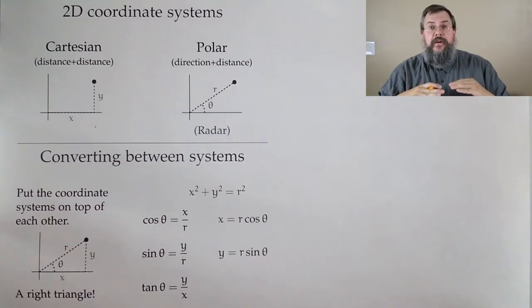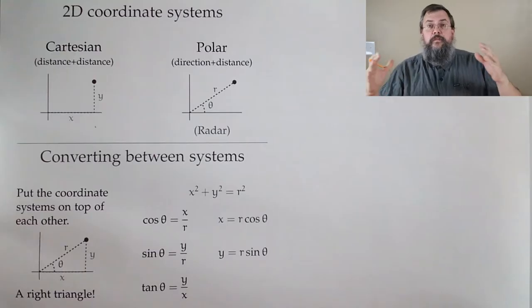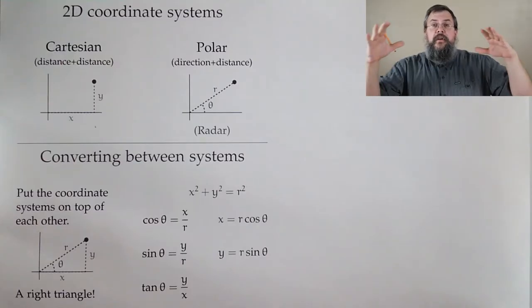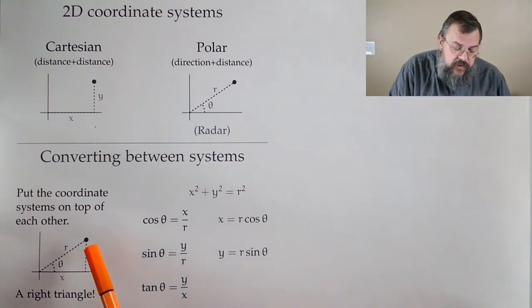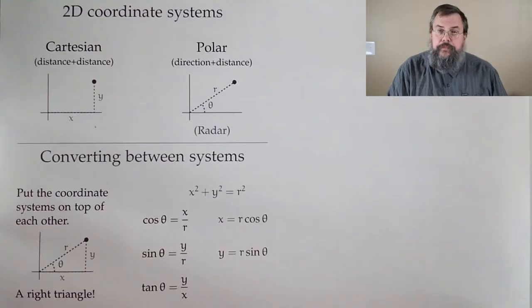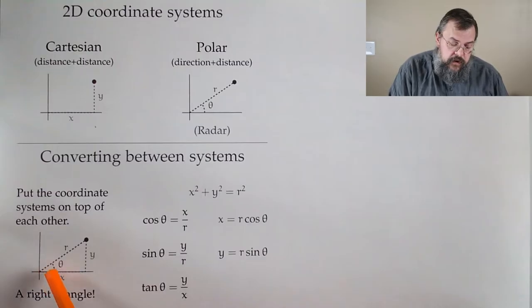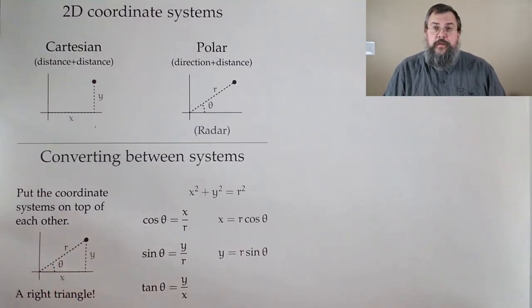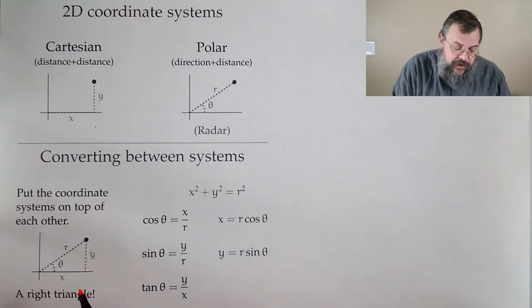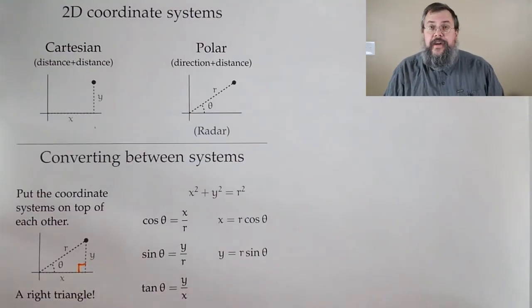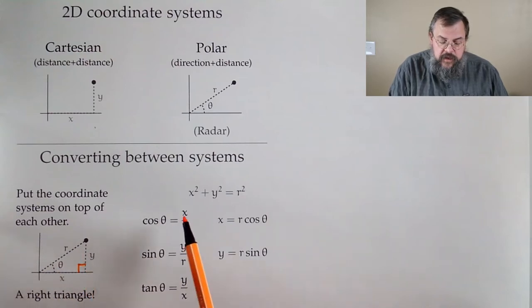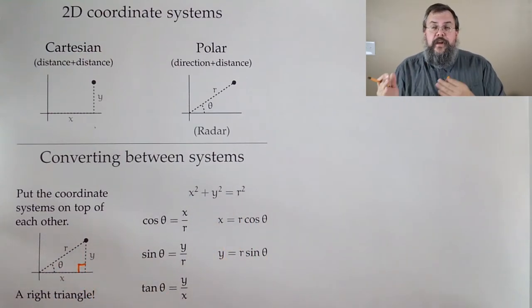It doesn't matter which coordinate system we have in two dimensions — we're still in two dimensions. We can move back and forth between them. The easiest way is to take these two coordinate systems and lay them on top of each other. We have one singular point that we can describe as a combination of x and y, or as a combination of r and theta. When we put this together, we see we have a right triangle. We have the Pythagorean theorem: x squared plus y squared equals r squared. That's a nice formula to convert between x, y, and r.